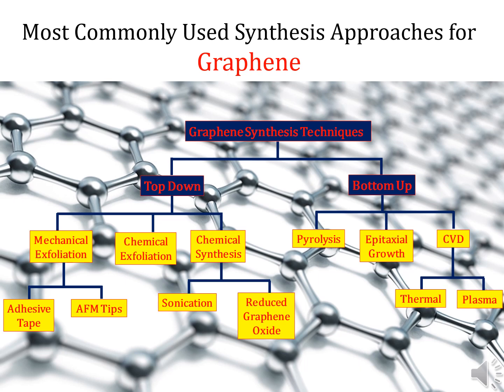First, we discuss the top-down approach. In this approach, mainly three processes come: namely, mechanical exfoliation, chemical exfoliation, and chemical synthesis. Under mechanical exfoliation, adhesive tape and AFM-tip approaches are used. Chemical synthesis approaches depend on probe sonication and the reduced graphene oxide approach. The bottom-up approach comprises pyrolysis, epitaxial growth, and CVD — that is, chemical vapor deposition. CVD can be further classified into two classes: first is thermal and second is plasma processes.